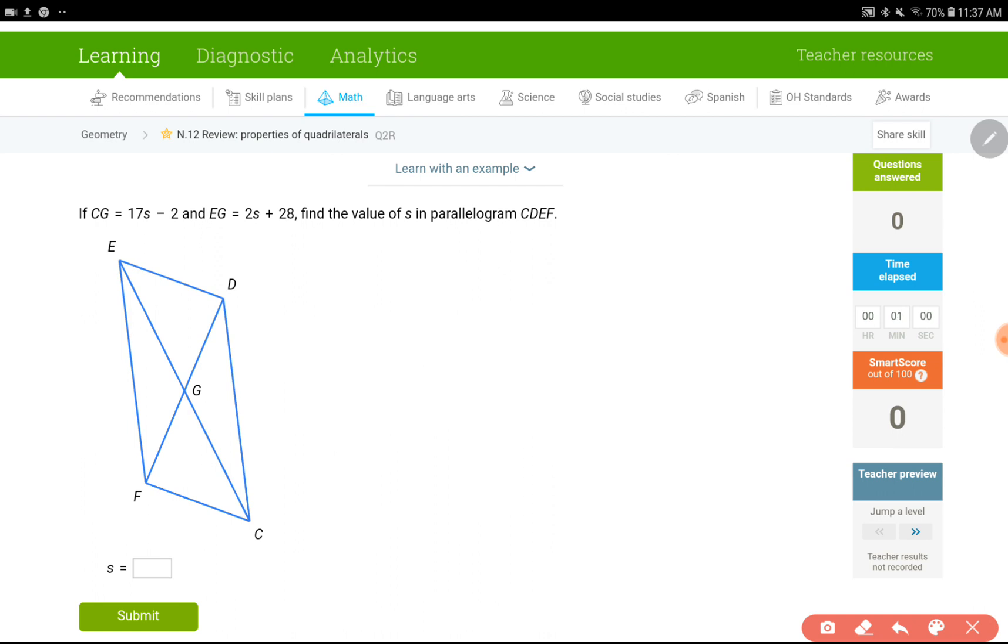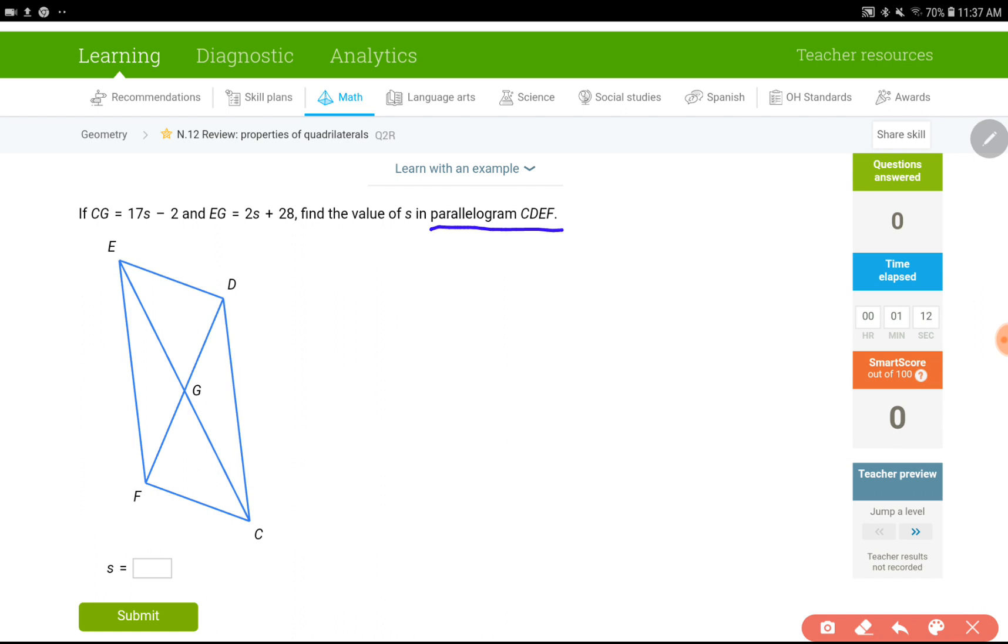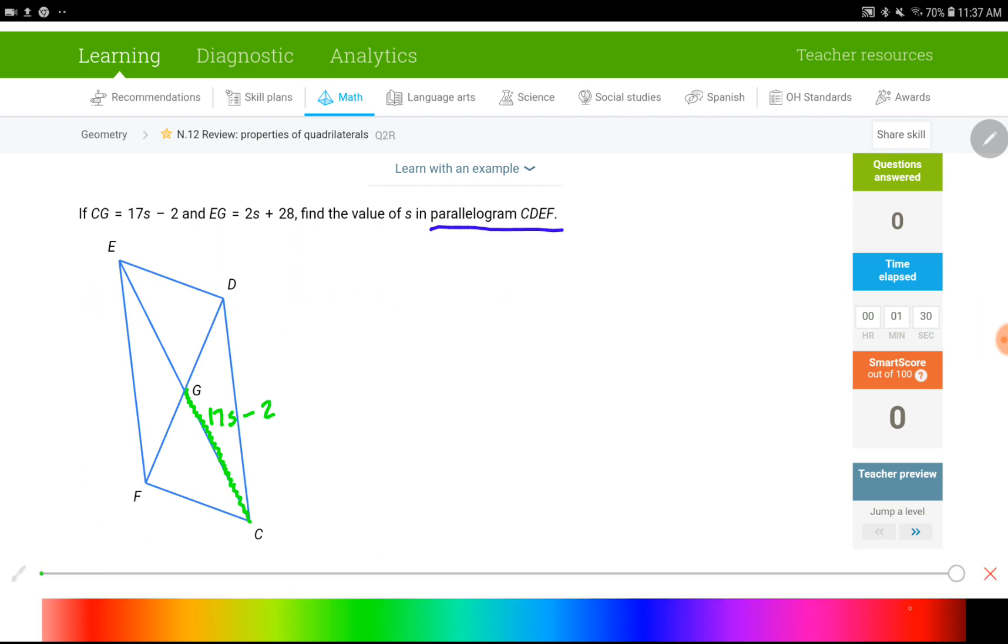Okay, let's get started. This one here we have a parallelogram. CG is given, I think I need to pick another color because that's already a blue figure. CG is 17s minus 2, let's find that first. CG is over here, 17s minus 2. And then EG equals to 2s plus 28, EG is right here.